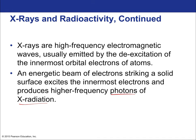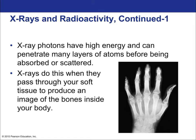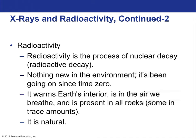X-ray photons have high energy and can penetrate many layers of atoms before being absorbed or scattered. They pass through soft tissue to produce images of bones inside your body. They can also cause cell mutations and cell death, which is why they must be used sparingly. If you have very high-speed electrons hitting the atomic nucleus just right, they can excite those innermost electrons, which then emit a very high energy photon — x-radiation.